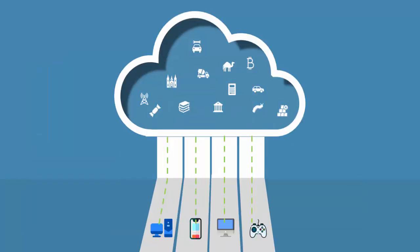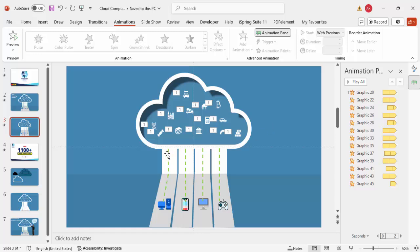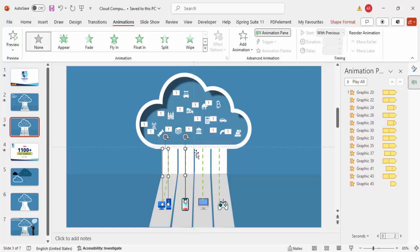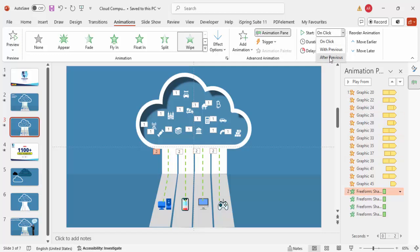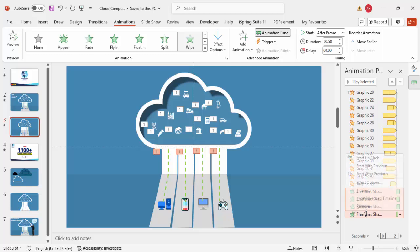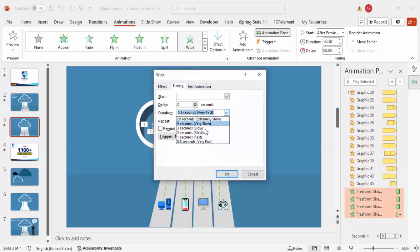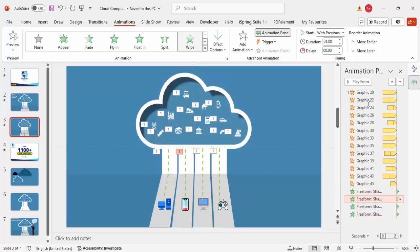When you play the slide, the icons will pulse with different time intervals rather than all at once. Next, select all the connector lines by holding Shift, and apply a Wipe animation effect set to come from the top. Set it to trigger either On Click or After Previous to make it continuous. Select all four animation effects in the pane, right-click > Effect Options > Timing, set the speed to Fast or Very Fast, set Repeat to 'Until End of Slide', and click OK. You can also add different delay values for each line.